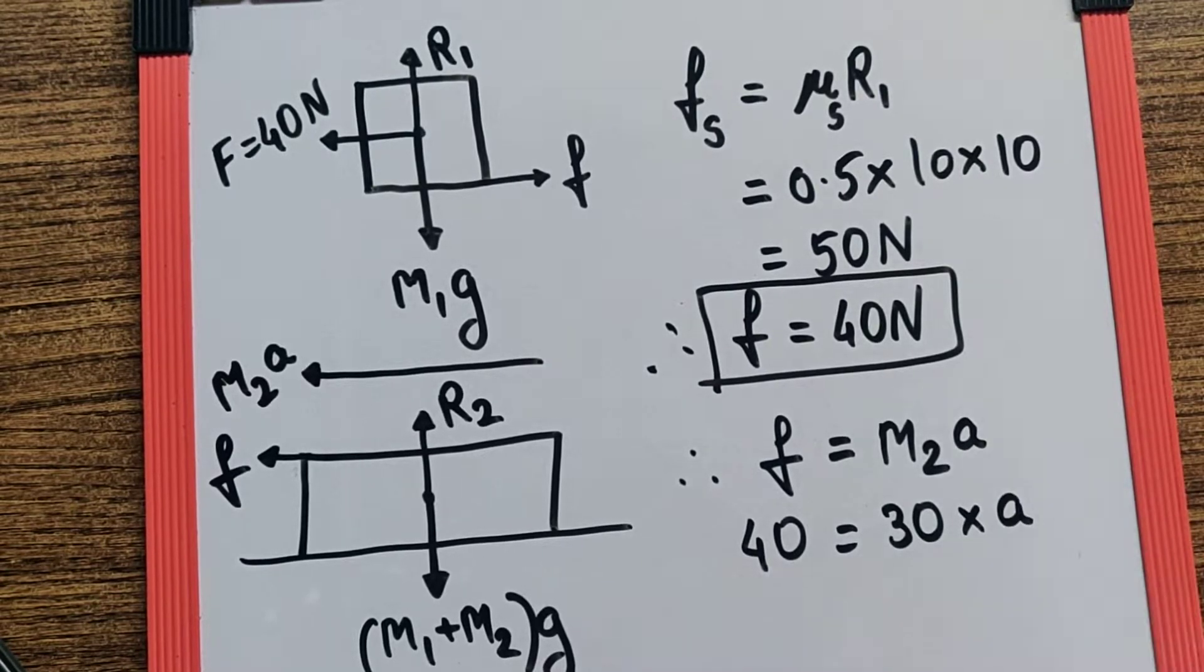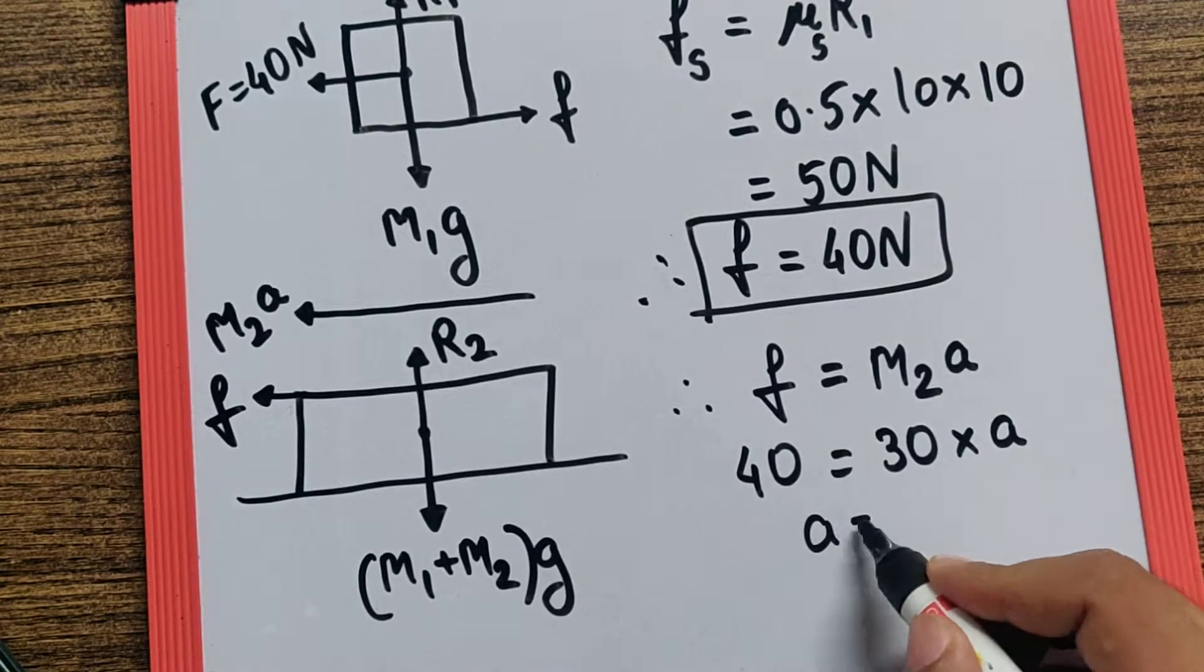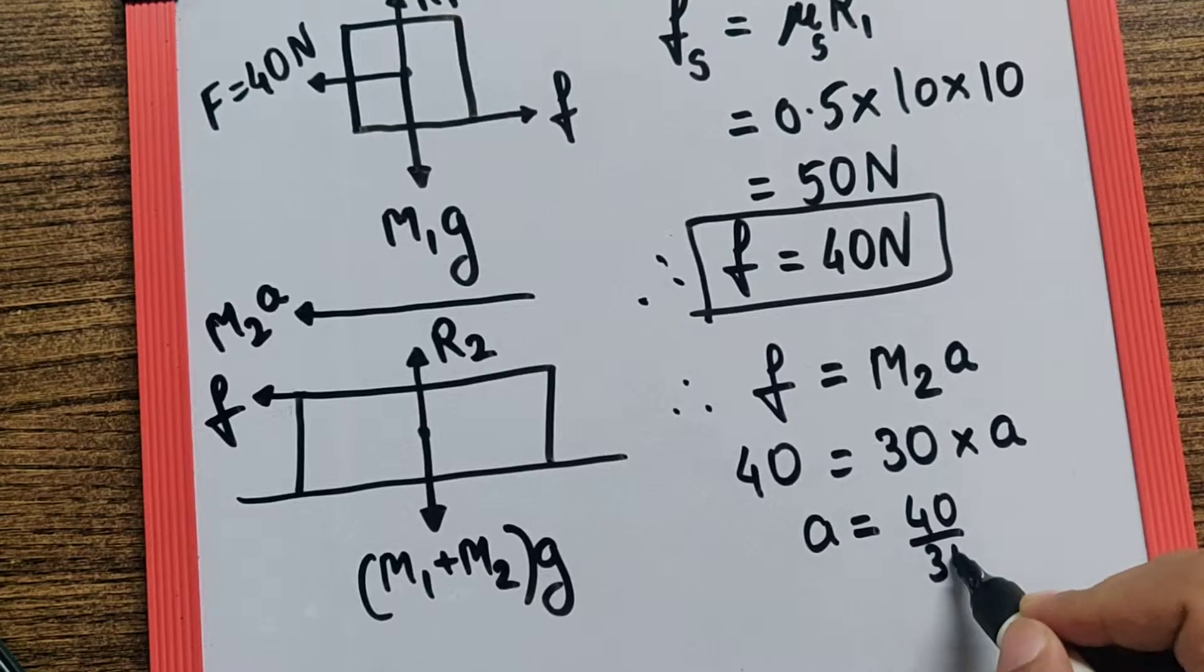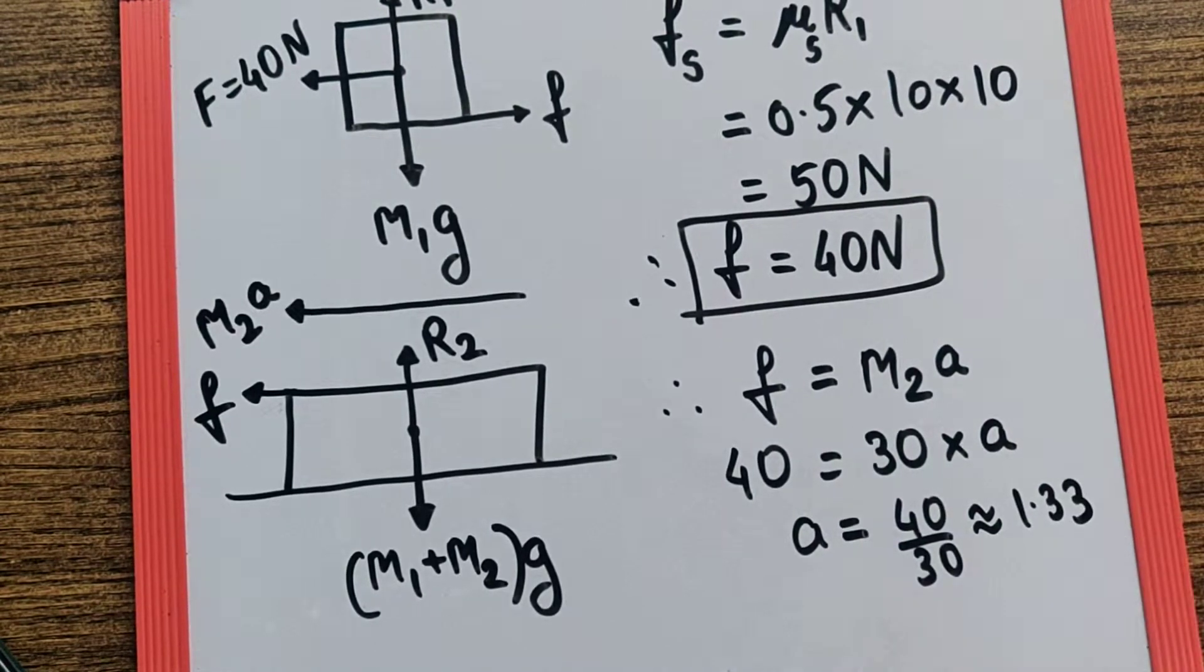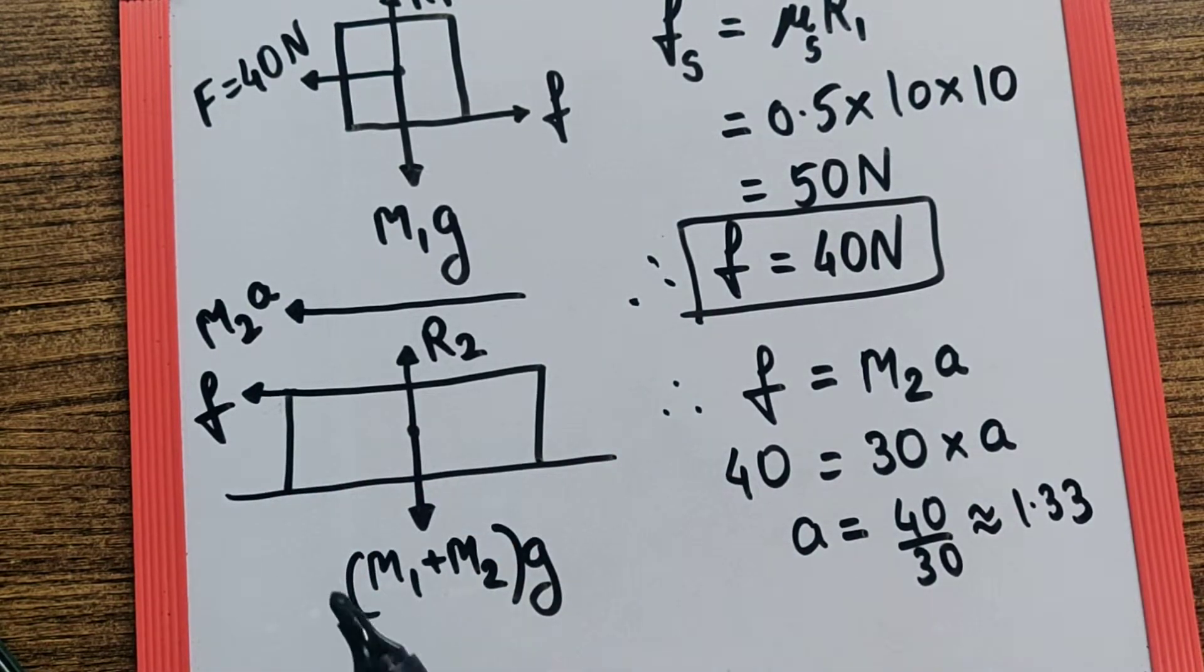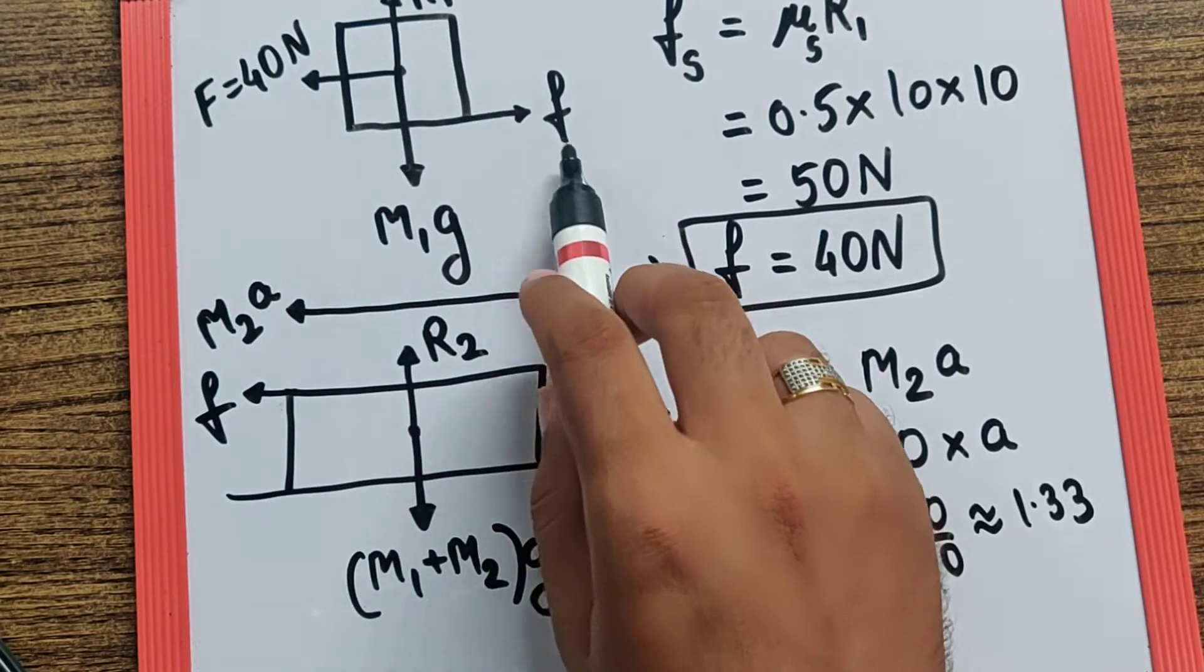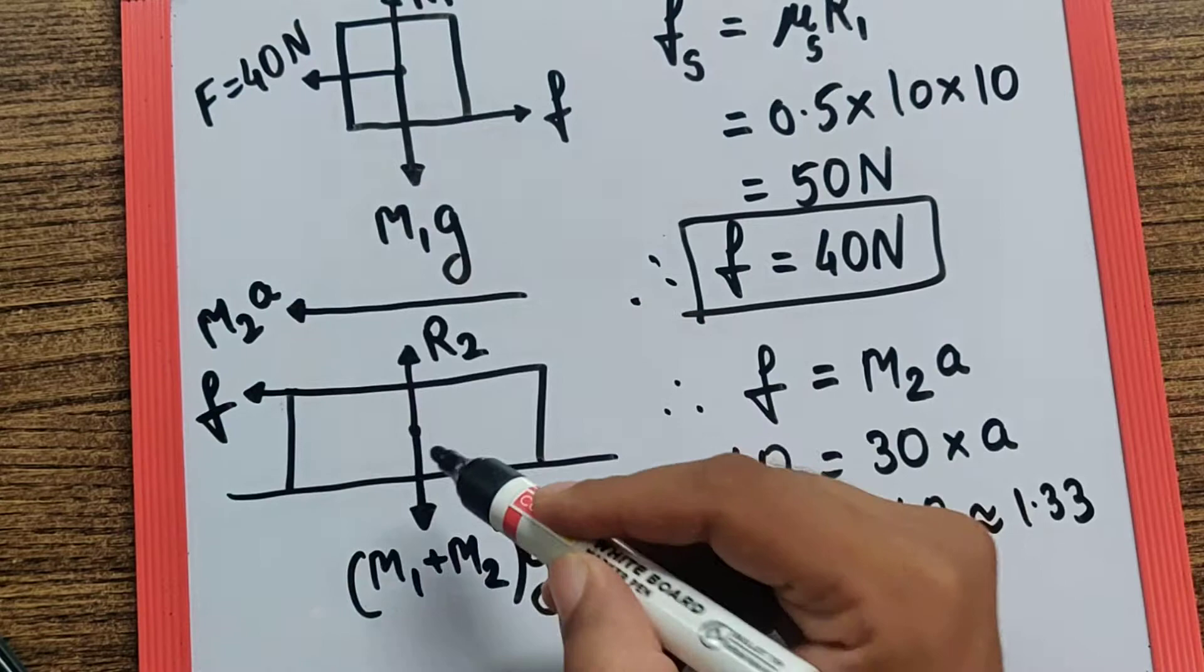and so the acceleration is going to be 40 by 30, which is approximately 1.33 meters per second squared. But now if you try and understand, the block or the slab is not going to move alone. Since the block is experiencing enough friction to not allow it to move, we can say the block and the slab will move with a common acceleration.